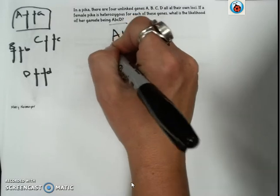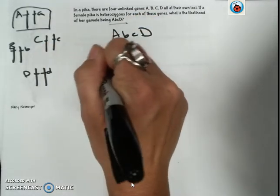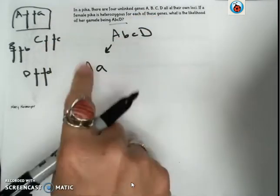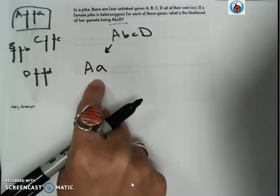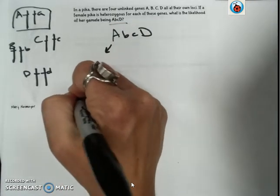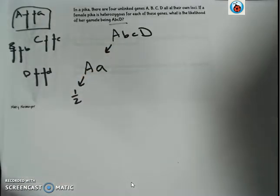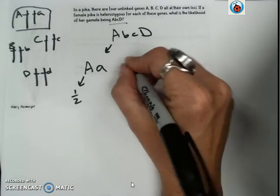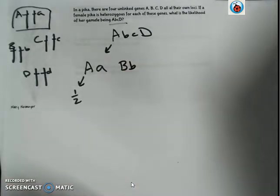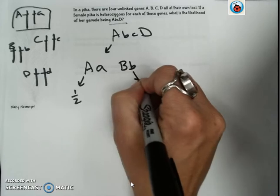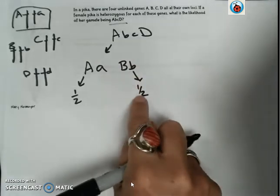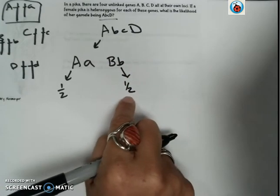So if we look at Mendel's law of segregation for the A gene, she is heterozygous. So you have a one half chance that the gamete will inherit a dominant allele. Now she is also heterozygous for the B trait. And there is a one half chance that the gamete will inherit this recessive allele for B.